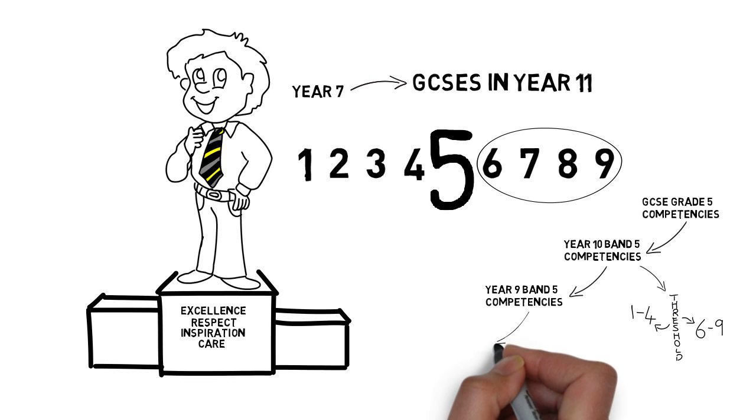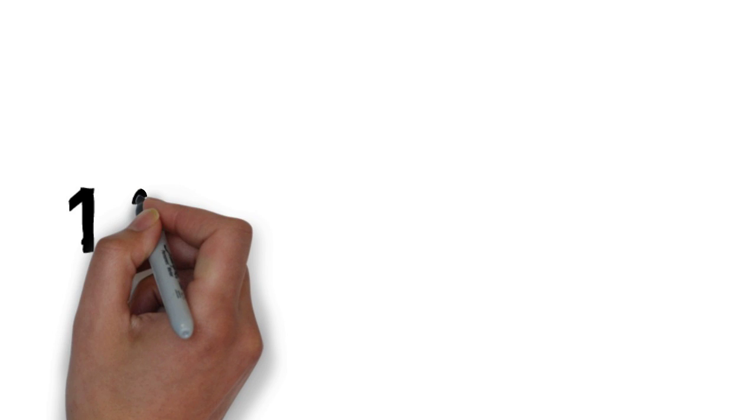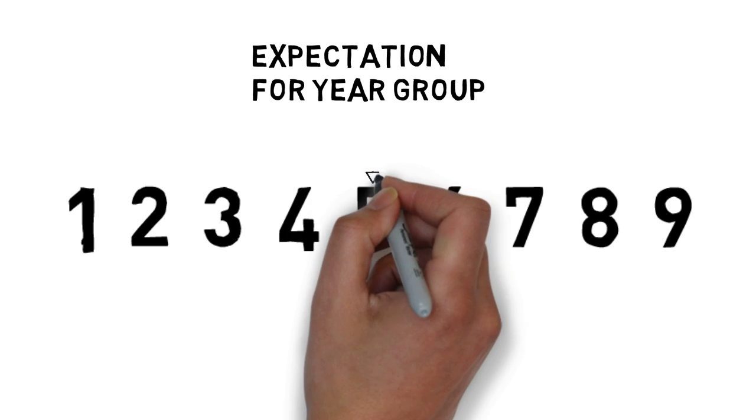This is repeated for Year 9, 8, and 7. The key point is if a student meets the expectations in a year, they will be awarded a Band 5.